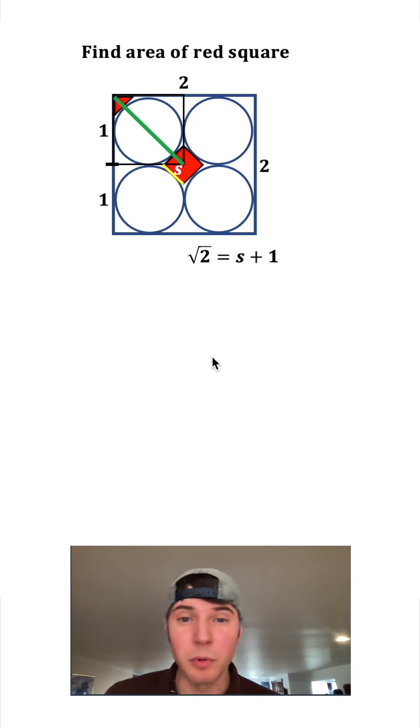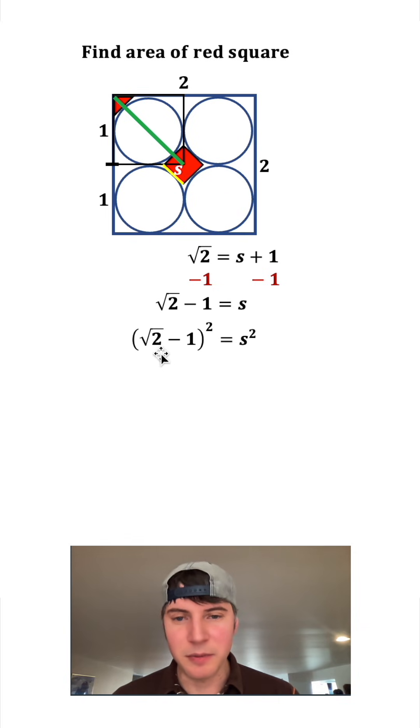And then we can smush this together and clean all this stuff up. Scoot this over, and now we can solve for s. Let's subtract one from both sides and we get s equals square root of two minus one.